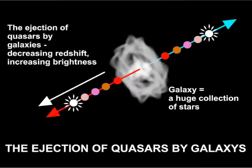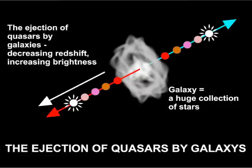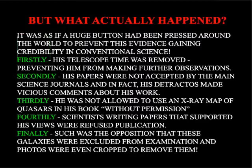Arp also found that there was often another quasar on the opposite side of the galaxy, as though the galaxy had expelled two quasars in opposite directions. Furthermore, as the quasar moved away from the galaxy, their redshift reduced and their brightness increased. So there was clear evidence that redshift was not an indicator of speed of recession, and this should have demolished the Big Bang theory. But what actually happened?